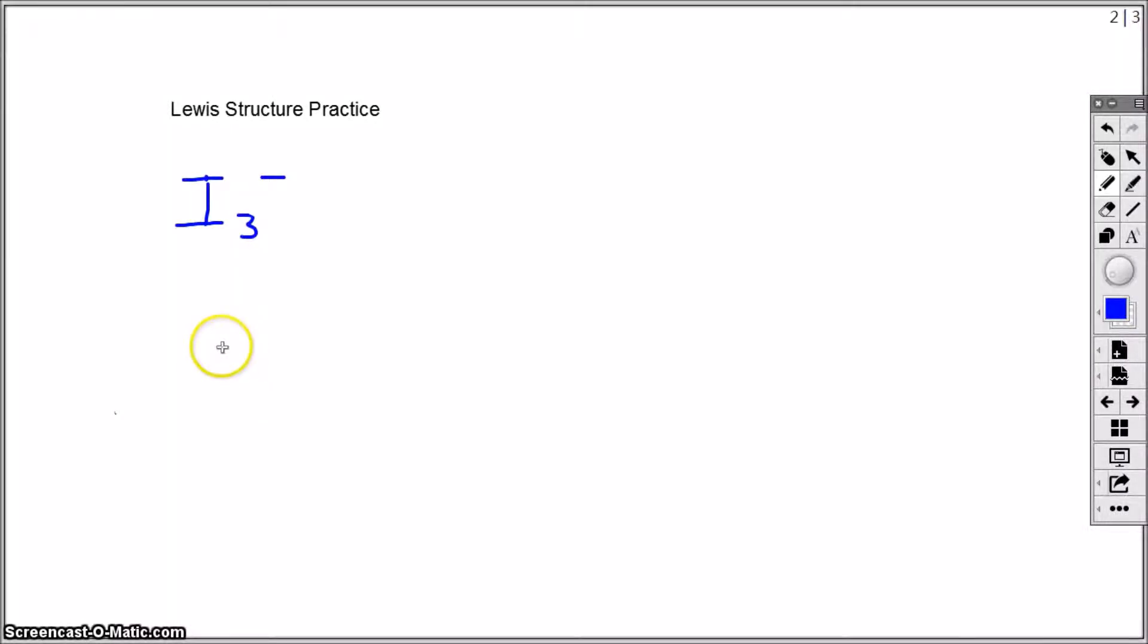Hello and welcome. In today's lesson, we will continue drawing Lewis structures. In this case, we will draw the Lewis structure for the triiodide anion, the ion with the formula I3 with a minus one charge.